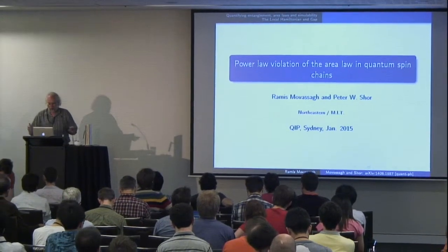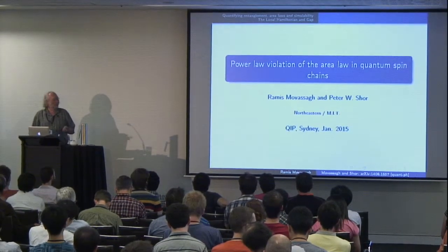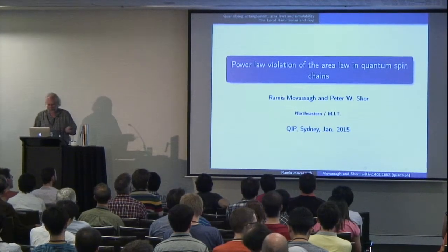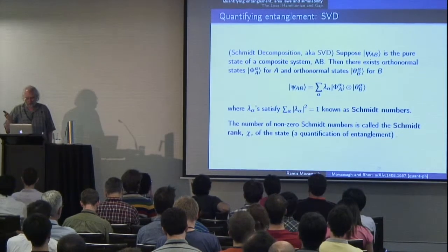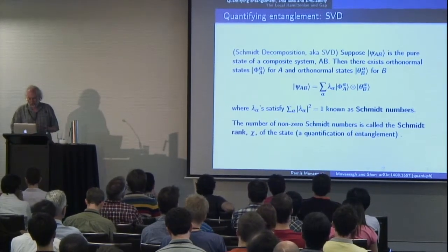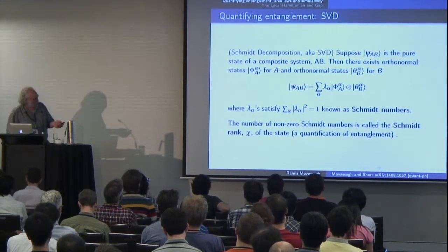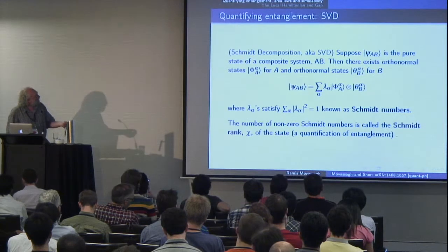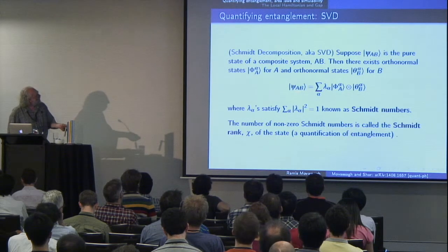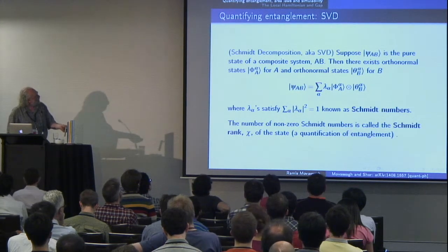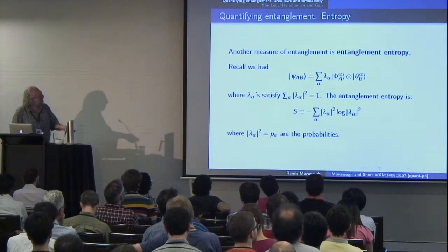So I'll be talking about power law violations. We've heard a lot about area laws here, so I'll go through the background slides quickly. There are two ways of quantifying entanglement I'll be talking about: the Schmidt rank, which is just the number of non-zero coefficients in the Schmidt decomposition, and the other is the standard measure of entanglement entropy.